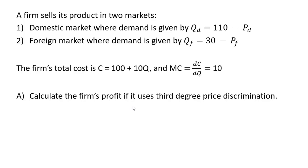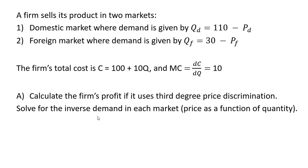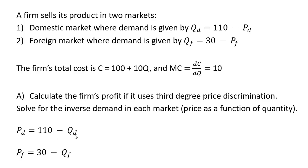Let's calculate the firm's profit if it uses third-degree price discrimination. First, we're going to solve for the inverse demand in each market — that means price will be a function of quantity. Taking the domestic and foreign demand equations and solving them both for the price term, we get the domestic inverse demand and the inverse demand in the foreign market.